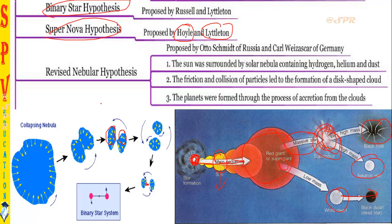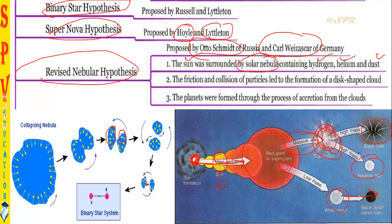The revised nebular hypothesis was provided by Otto Schmidt and Carl Weizsäcker. They said the sun was surrounded by a solar nebula containing hydrogen, helium, and dust. Friction and collisions between particles led to the formation of a disc-shaped cloud around the sun. Planets were then formed through the process of accretion of these clouds — the particles condensed and the disc gradually formed into the planets.